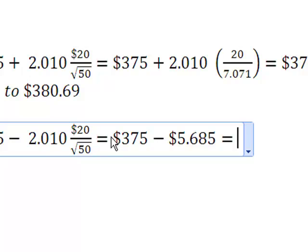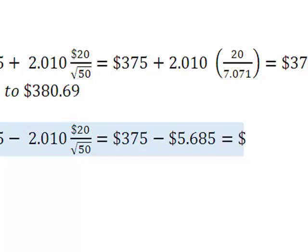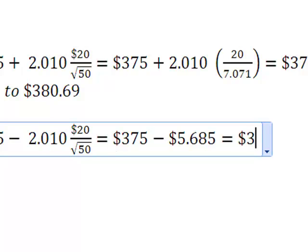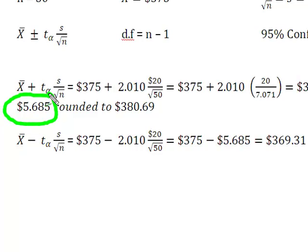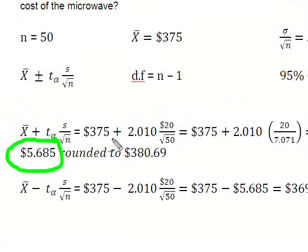And when I get that, that will give me the lower end of my confidence interval. Remember, with a confidence interval, it's just that. It's always an upper and a lower number. And so what I'm going to end up here is I'm going to end up with $369.31. All I simply did was, instead of doing math twice, is I simply took this 5.685 right here, and instead of adding it, I took it over here, and I subtracted it to give me the lower end of my interval.